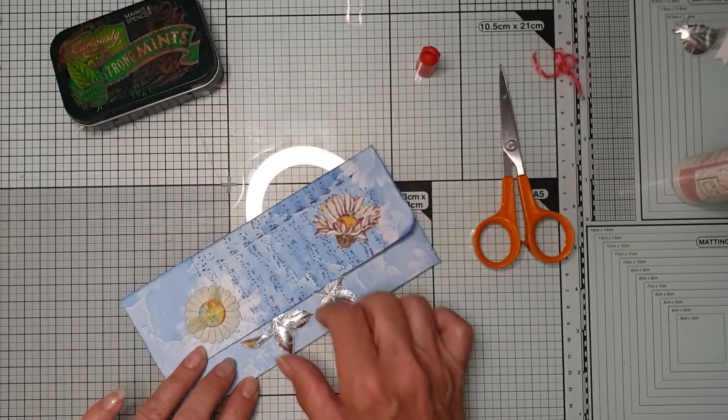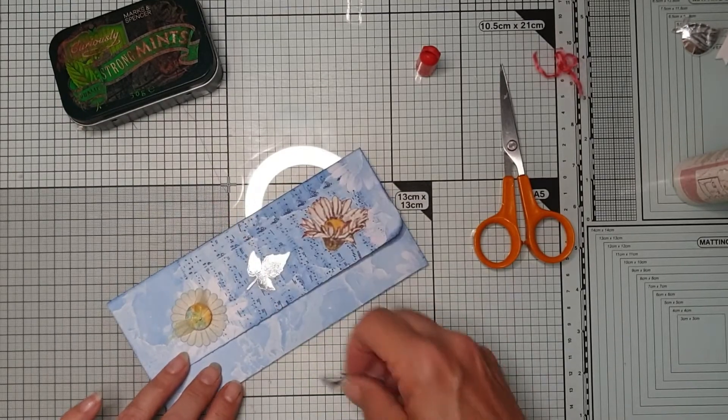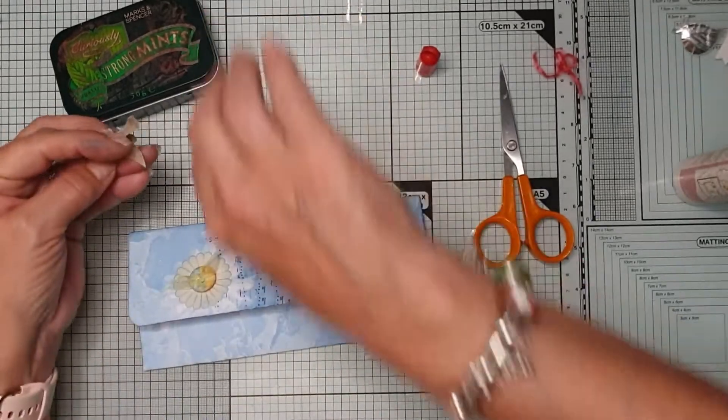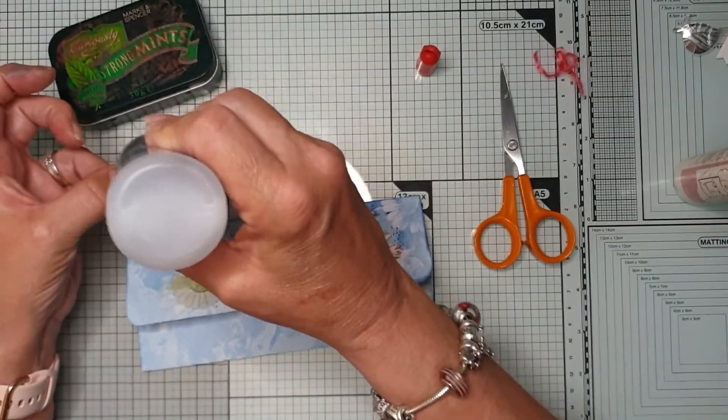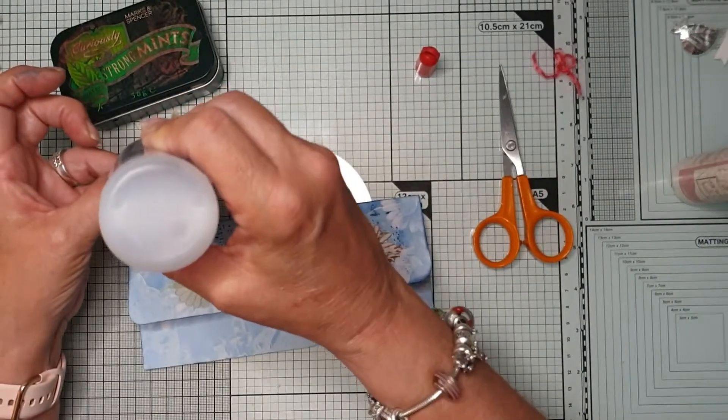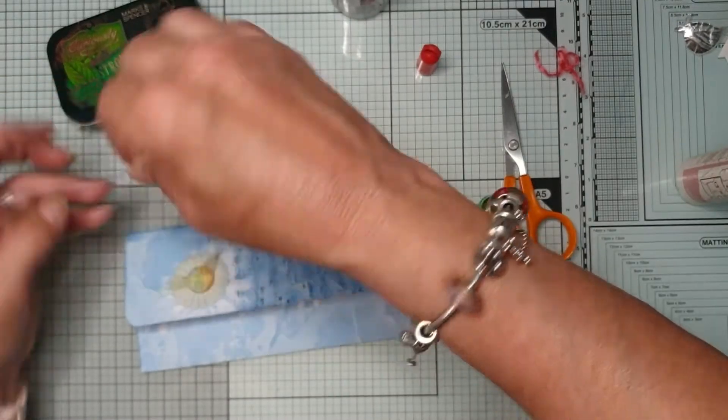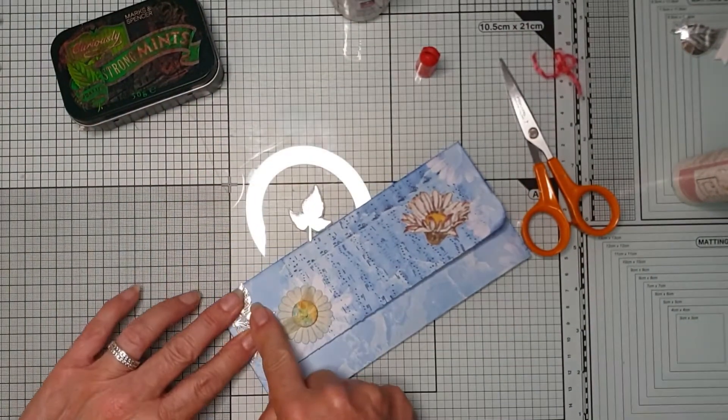Quite like that one. Right. We'll use this one again. Now with it being vellum I'm going to use Fabri-tac. Although because it's got the silver over the top you wouldn't see the glue anywhere. And we'll put that one in that corner.